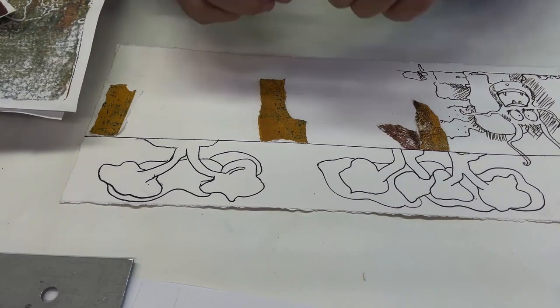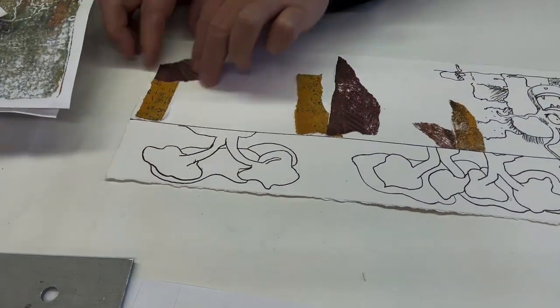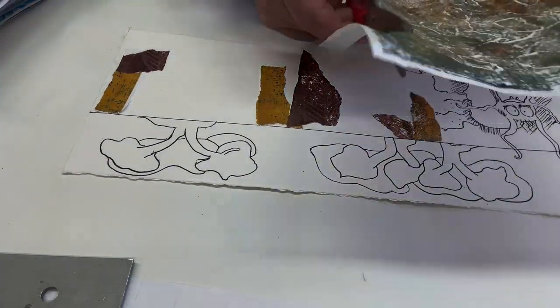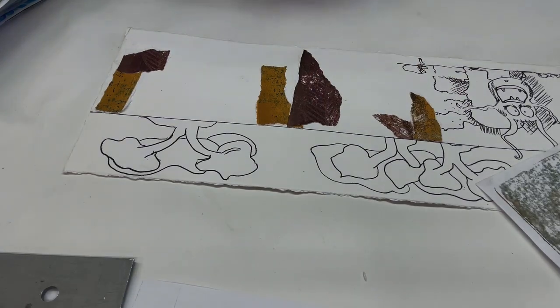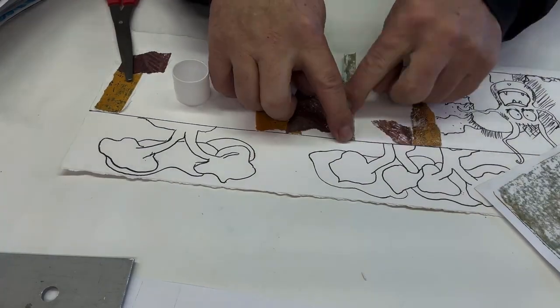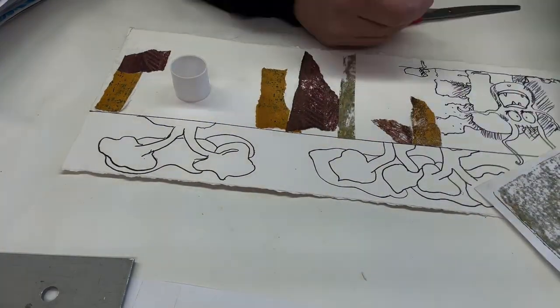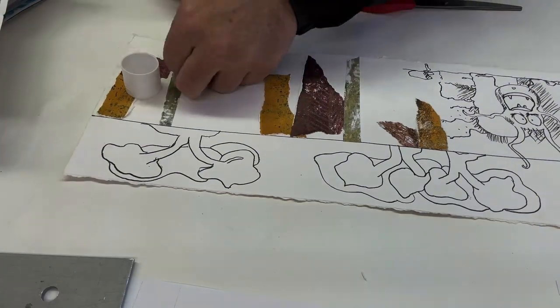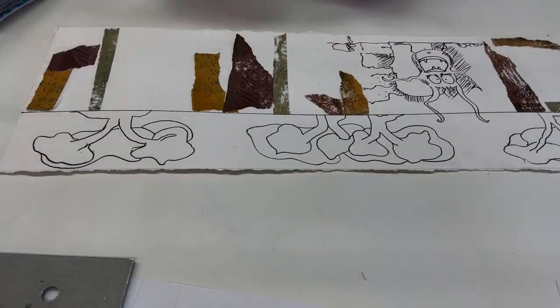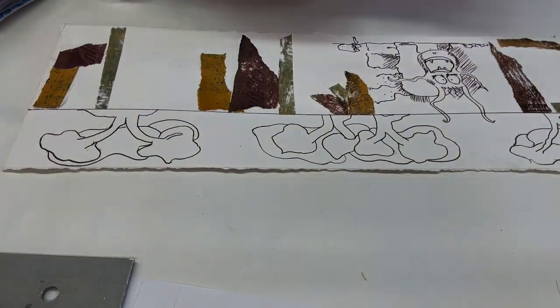But I really want to vary the size and the shape, the placement. I have no plan, just doesn't really matter. Some of them are going to have a solid color edge where I rip it one way. And if I rip it the other way, it gives you a white edge. So just mixing those up, a few straight edge, but most of them are torn.